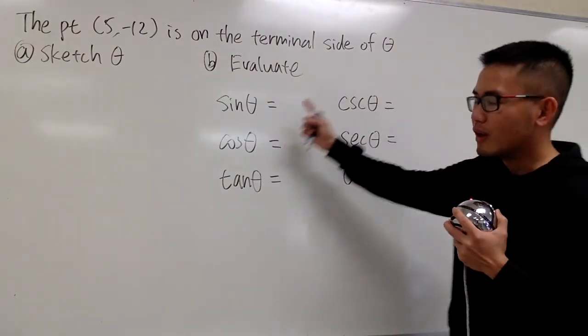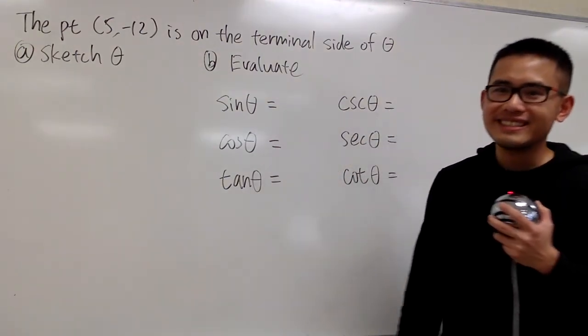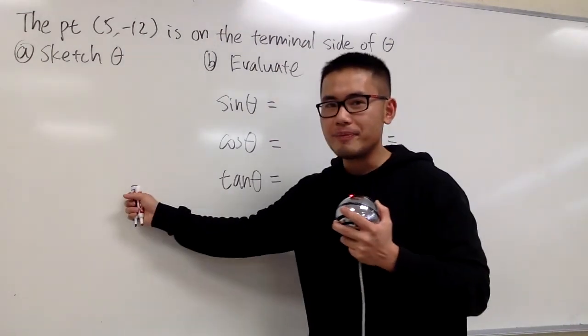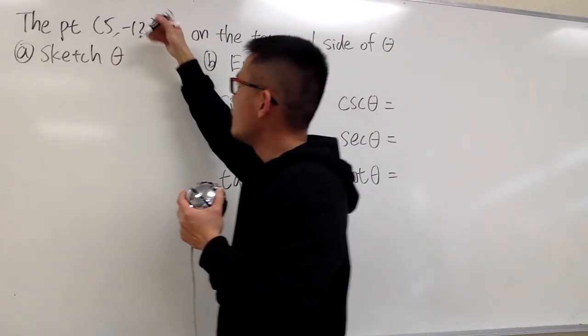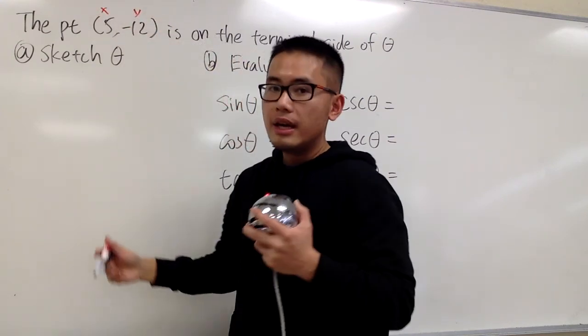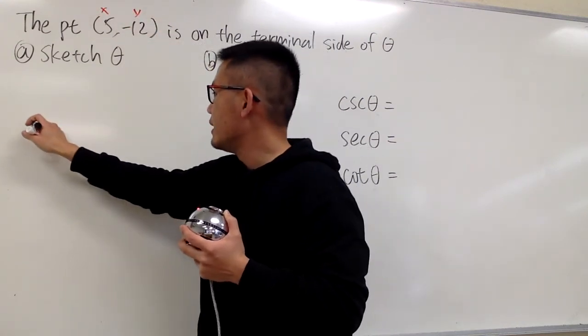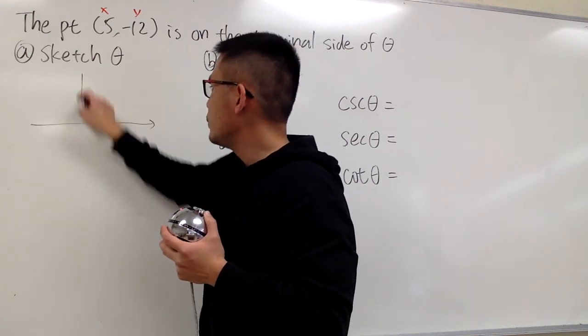Next, we are going to figure out the values of all these six trig functions. Let's go ahead and get to work right here. When we are given a point, we know this is the x value and the y value, right? So let me label that for you guys right here. And let's just go ahead and draw the x-axis and the y-axis.